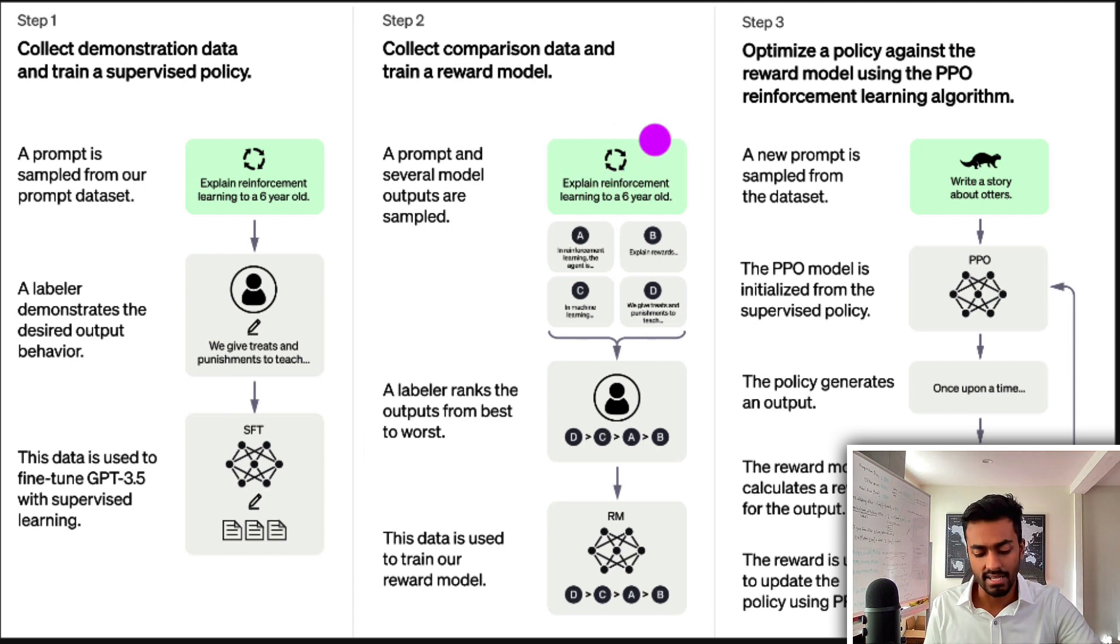Using the supervised model we'll pass in an unseen prompt and generate multiple responses from this prompt. Then we'll have a labeler rank these responses in the order of how high quality they think they are and the ranks are also going to be numbers that are assigned to each and every single response. So it's not just what D is greater than C greater than A greater than B but it's going to be like on a scale of 1 to 7, which is a Likert scale, they are going to be ranking these responses.